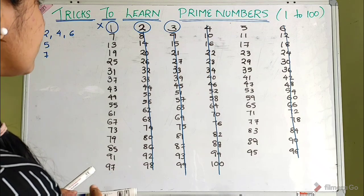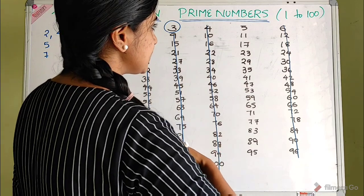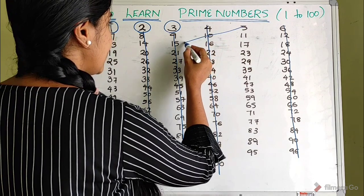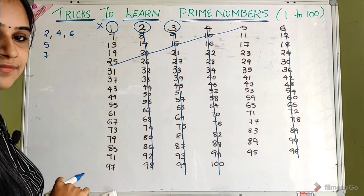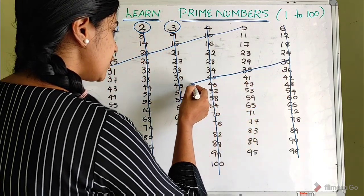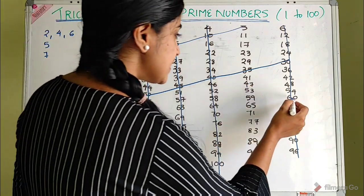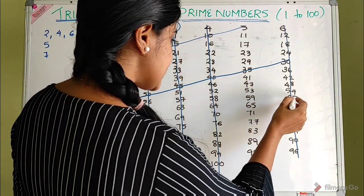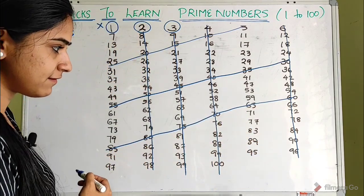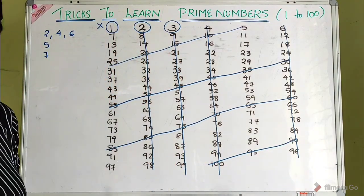This is 5. 5 is prime. The diagonal multiples of 5 are: 5, 10, 15, 20, 25, 30, 35, 40, 45, 50, 55, 60, 65, 70, 75, 80, 85, 90, 95, 100. So 5 is prime and all its multiples are crossed out.